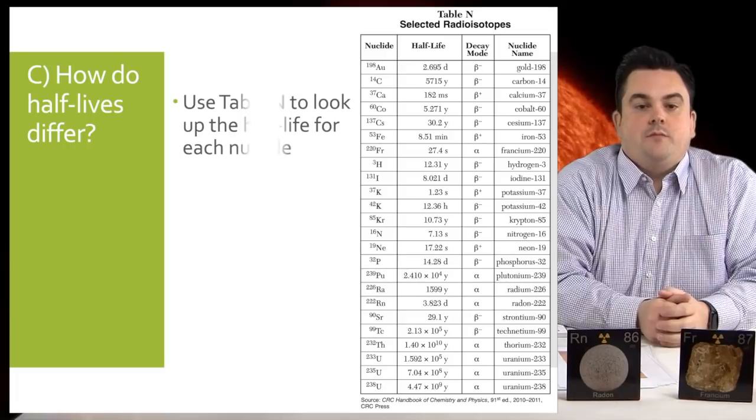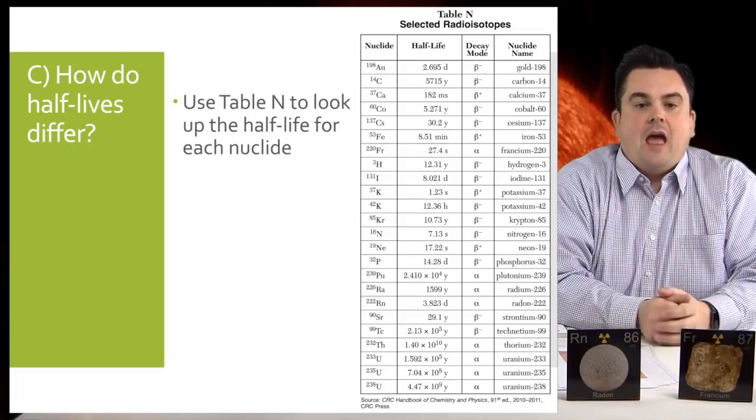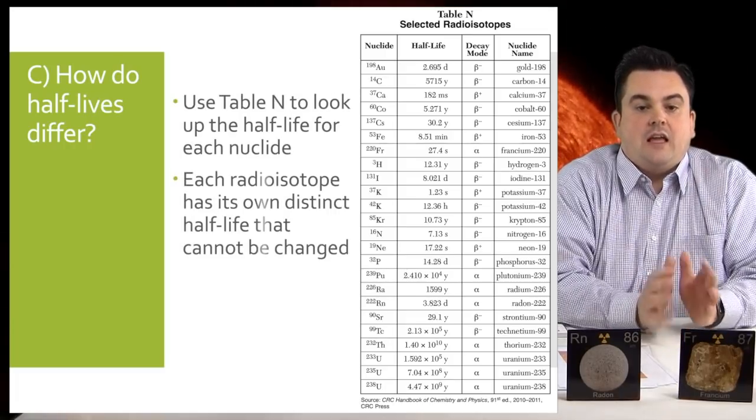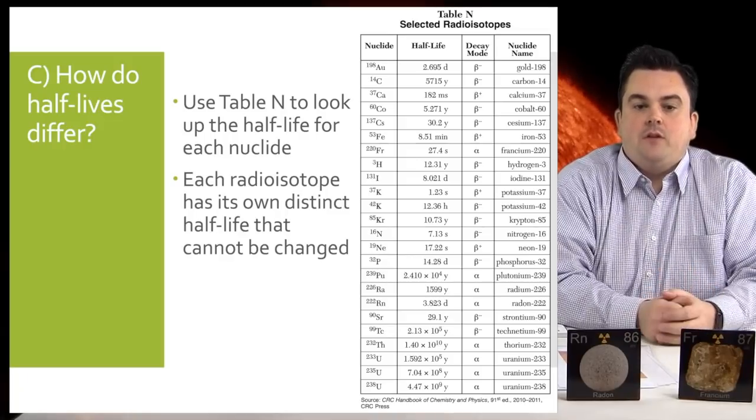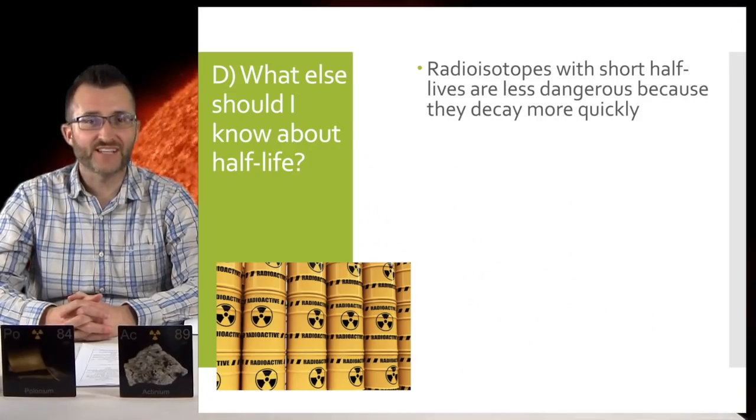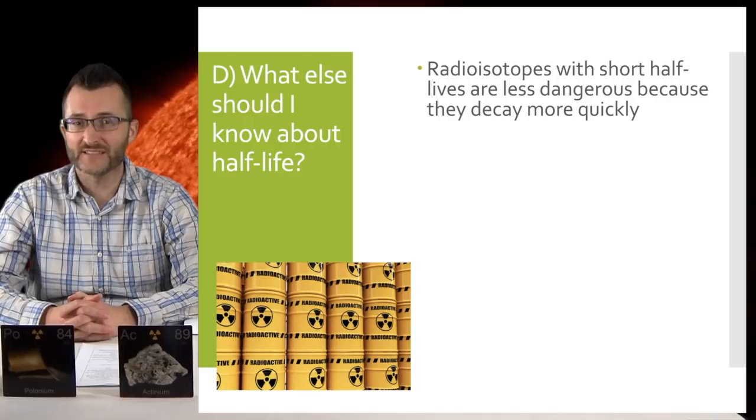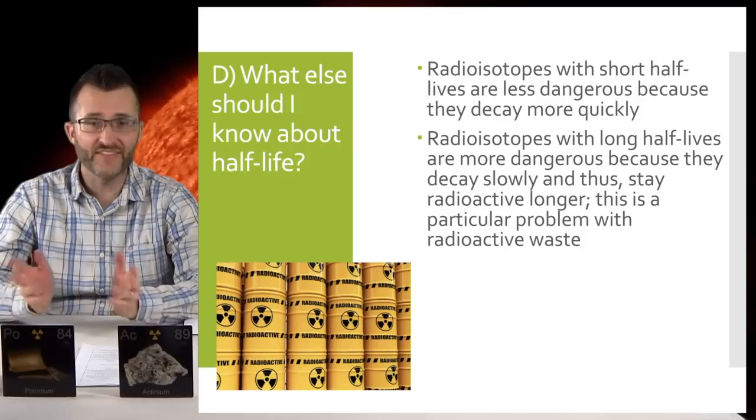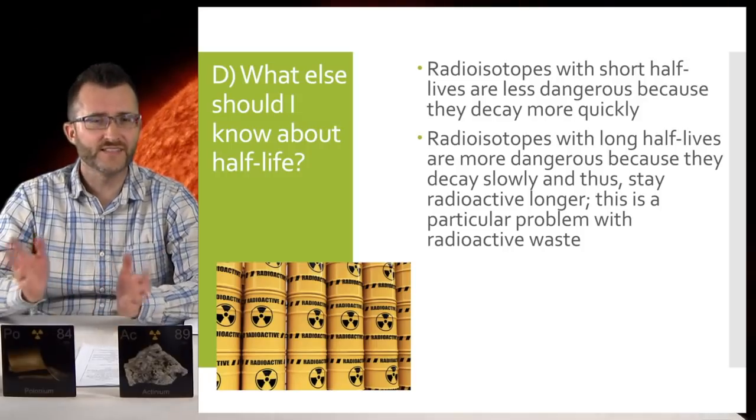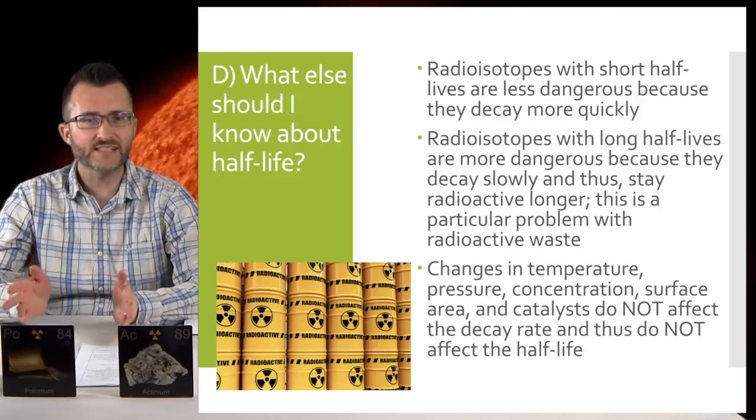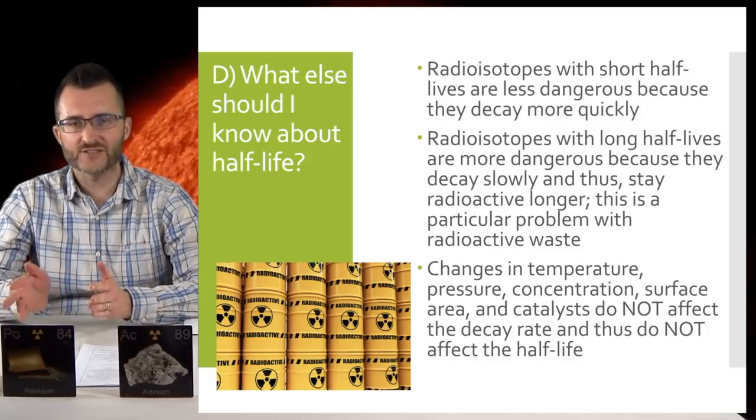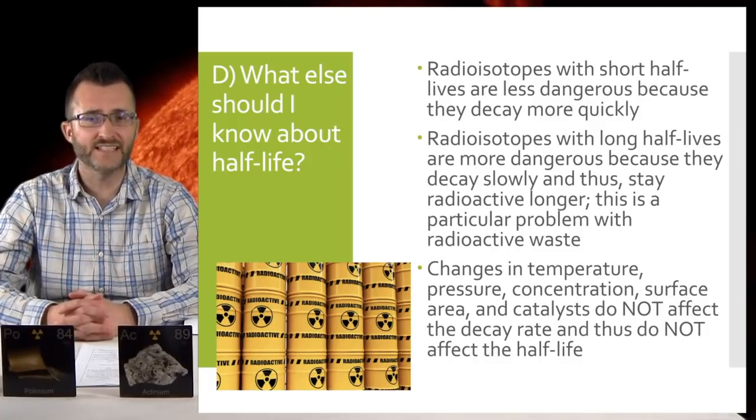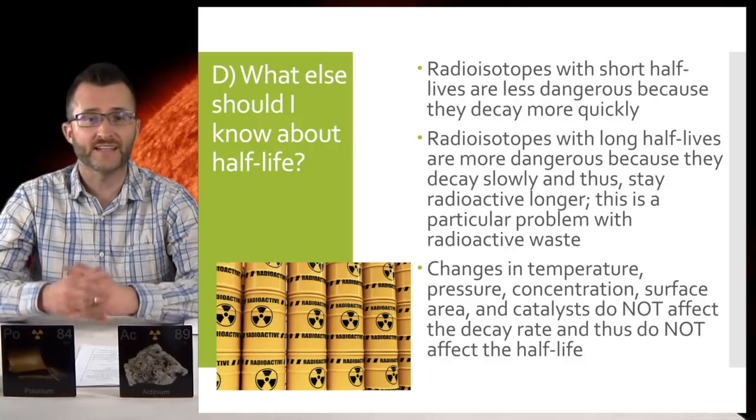How do half-lives differ? Use table N to look up the half-life for each nuclei. Each radioisotope has its own distinct half-life that cannot be changed. What else should I know about half-life? Radioisotopes with short half-lives are less dangerous because they decay more quickly. Radioisotopes with long half-lives are more dangerous because they decay slowly and thus stay radioactive longer. This is a particular problem with radioactive waste. Changes in temperature, pressure, concentration, surface area, and catalysts do not affect the decay rate and thus do not affect the half-life.